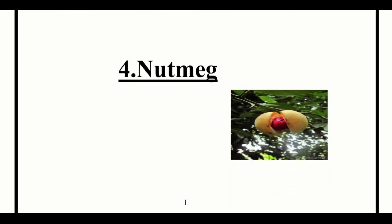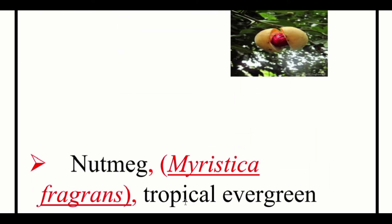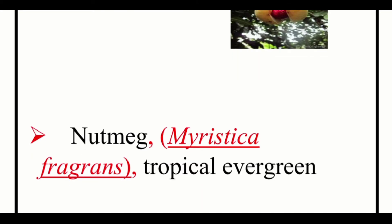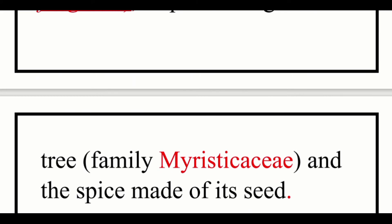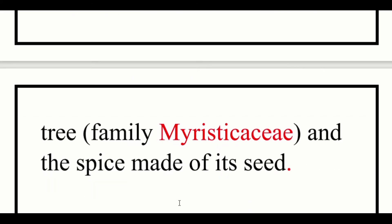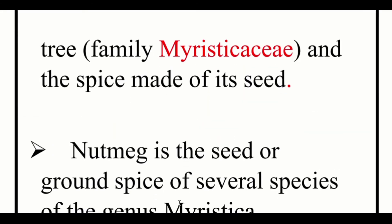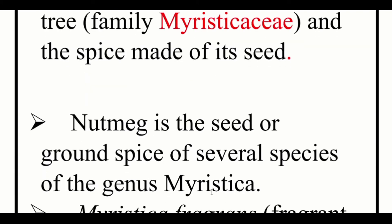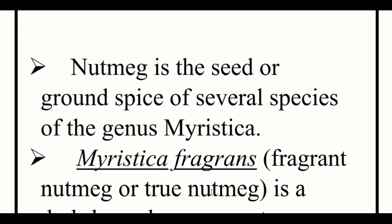The next one is nutmeg. Myristica fragrans — a tropical evergreen tree, family Myristicaceae — is a spice made from its seed. Nutmeg is the seed or ground spice of several species of the genus Myristica.